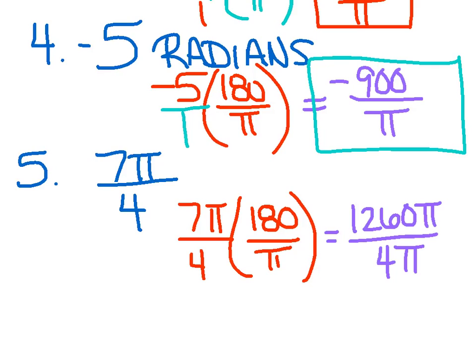Lastly, number 5. I want degrees, so the 180 goes on top over pi. Across the top, I got 1260 pi over 4 pi. And now I can reduce. I have a pi on the top and bottom.